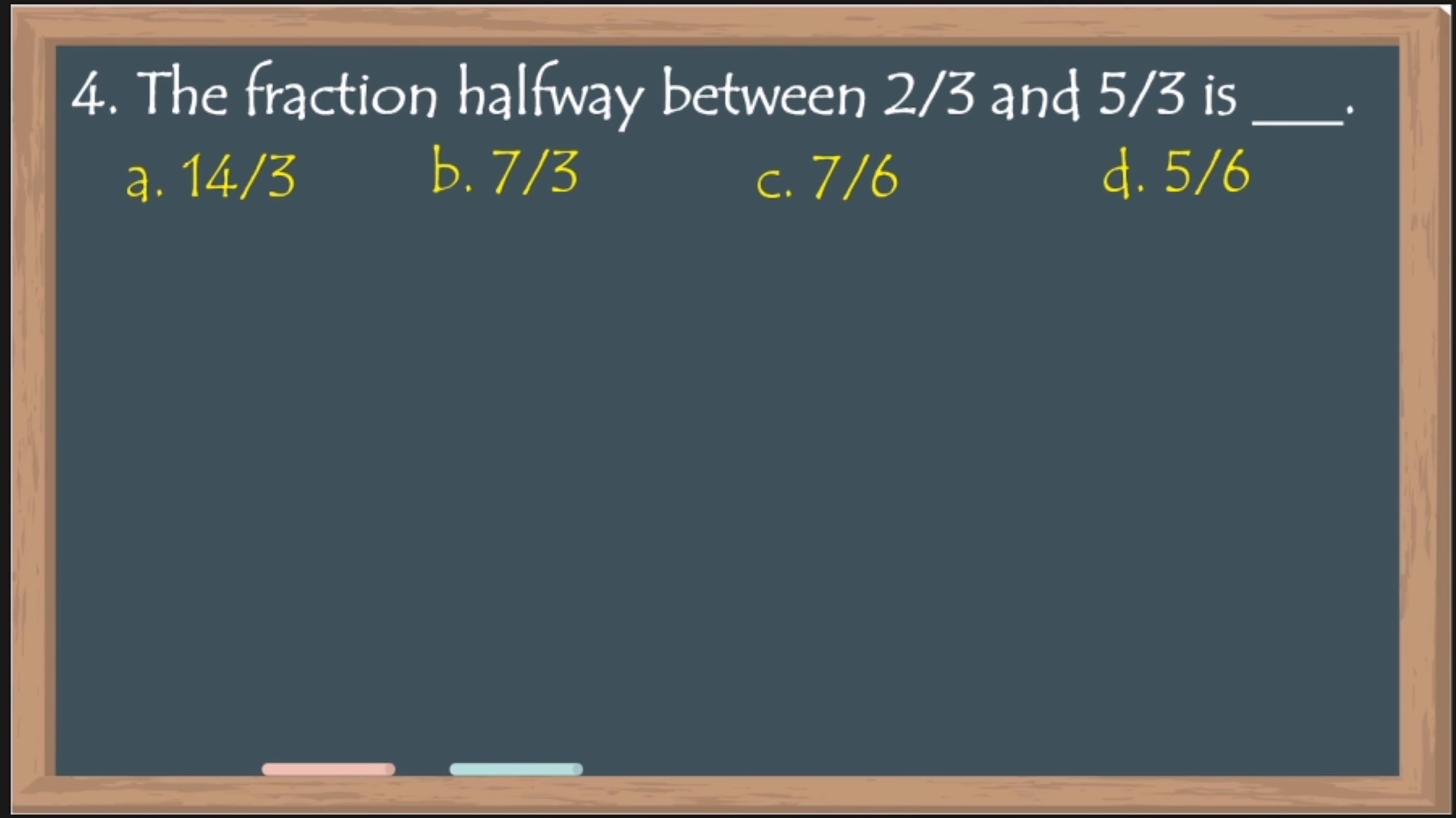Number 4. The fraction halfway between 2 third and 5 third is blank. When I say halfway, yung gitna ng 2 third and 5 third. So, to find yung gitna ng 2 third and 5 third, we need to add first yung two fractions natin na 2 third plus 5 third. Madali ito kasi ang ating denominator ay common which is 3. So, we just copy the common denominator and add the numerators. Now, divided by 2 kasi halfway ang sabihin.